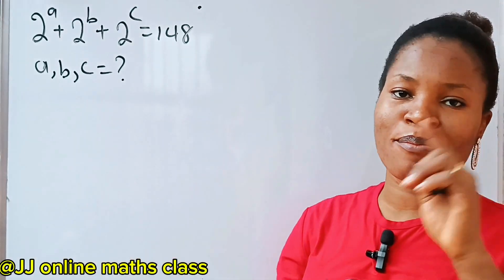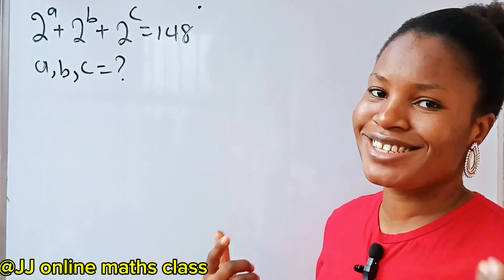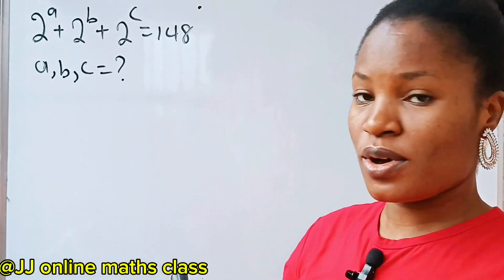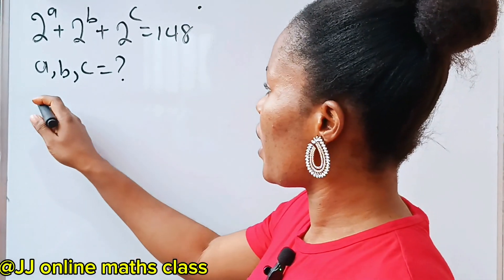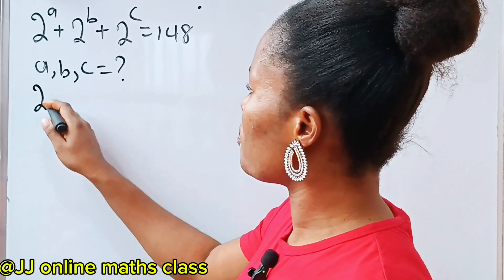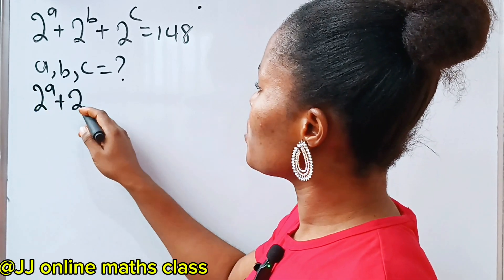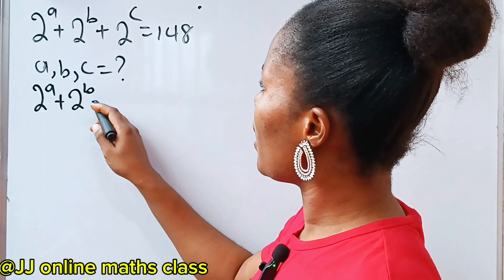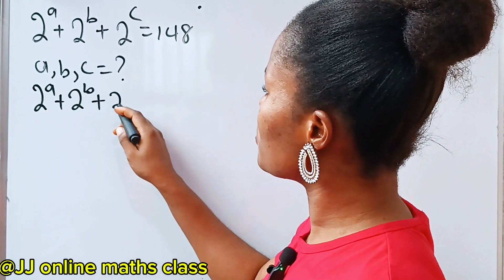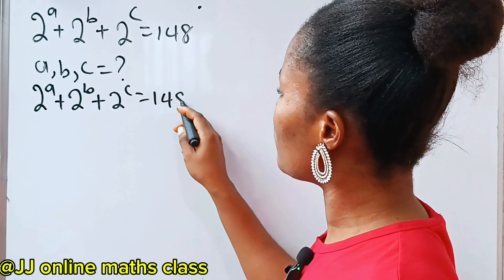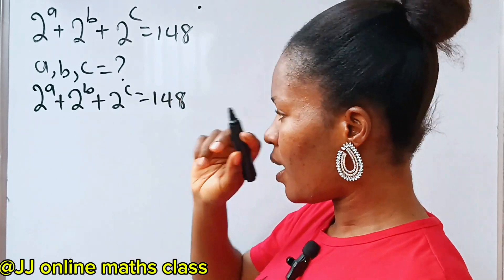Let's solve for A, B, and C. We have that 2 to the power of A plus 2 to the power of B plus 2 to the power of C is equal to 148.